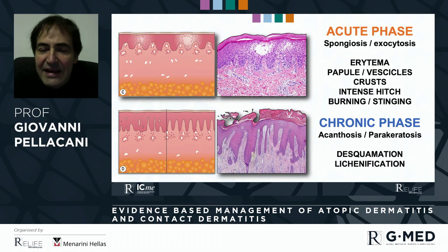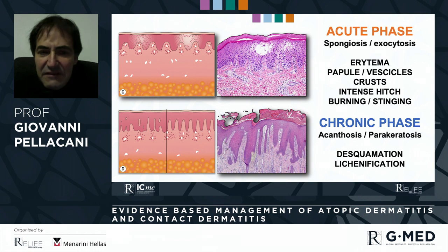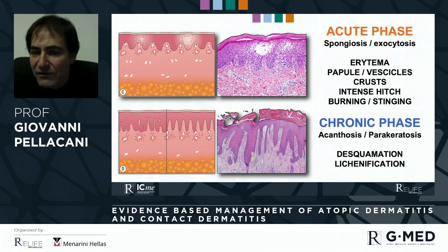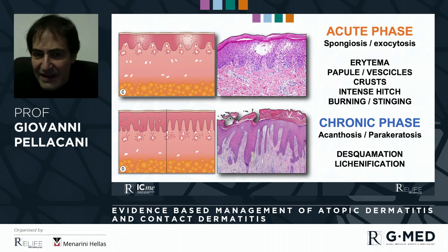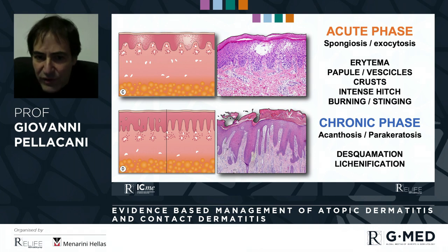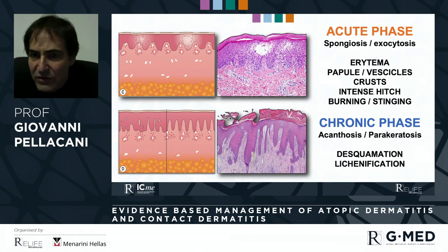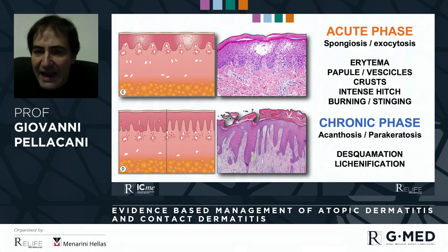Eczema is characterized by two different steps. An acute phase, which is an inflammatory phase with spongiosis and exocytosis that give rise to erythema, papule, vesicle, crust, itching, and burning sensation. And the chronic phase, where the inflammation decreases and we have more of an epidermal reaction with acanthosis, parakeratosis, thickening of the epidermis, desquamation, and lichenification.